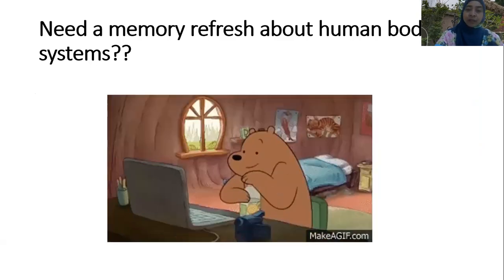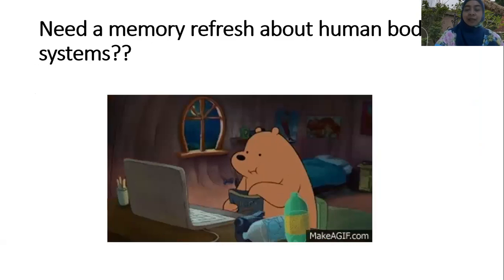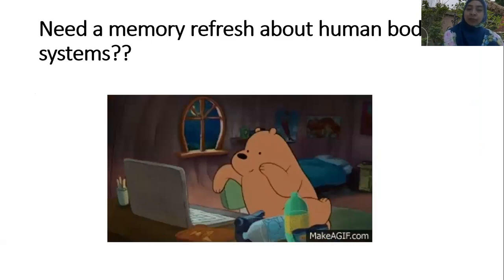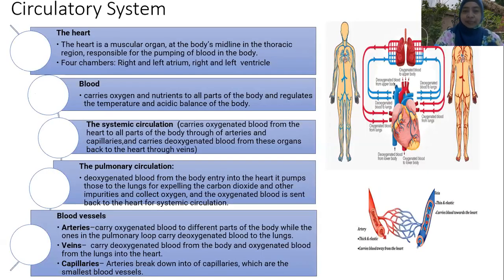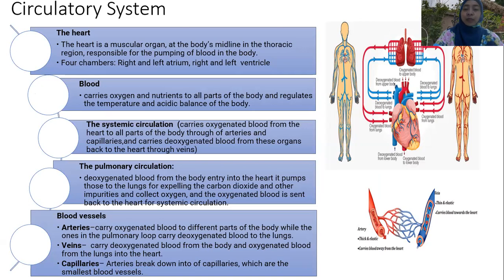The first system is the circulatory system. In the circulatory system, there are many organs involved: the heart, blood, systemic circulation, pulmonary circulation, and blood vessels.